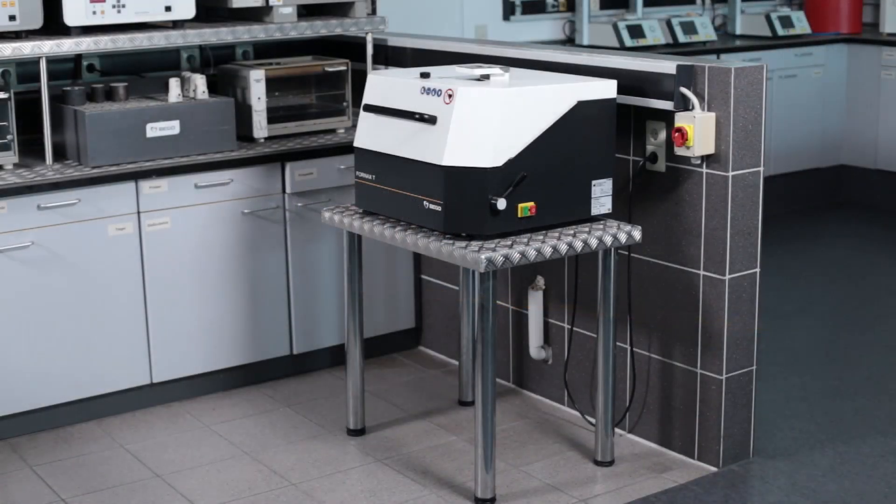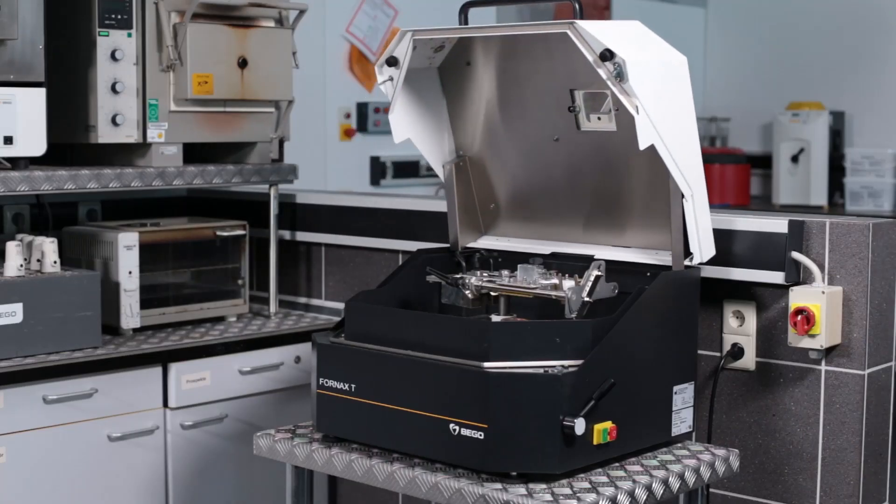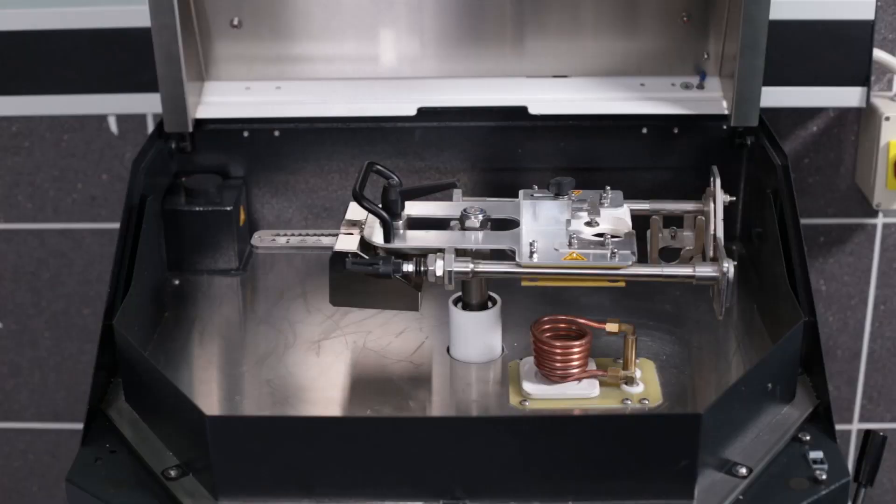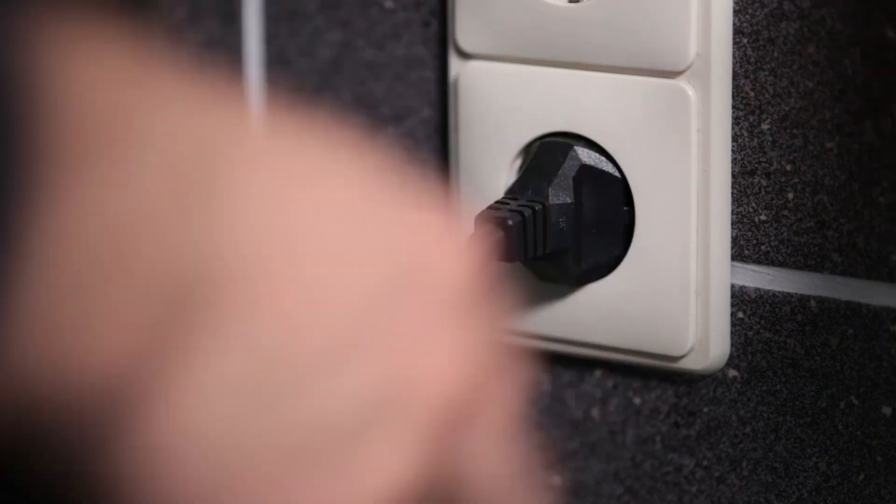The Fornax T is a tabletop device, hence the letter T. It is compact and a plug-and-play device. Before the first use, fill the internal cooling tank with water and connect the device to the power supply.